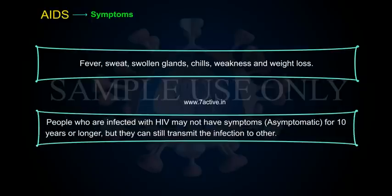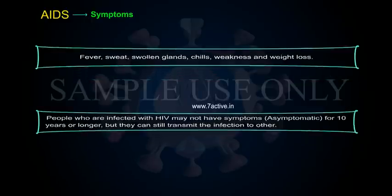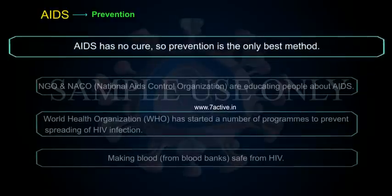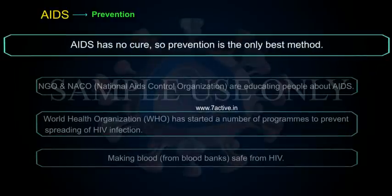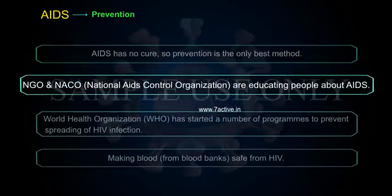People who are infected with HIV may not have symptoms — they can be asymptomatic for 10 years or longer. But they can still transmit the infection to others. AIDS has no cure, so prevention is the only best method.